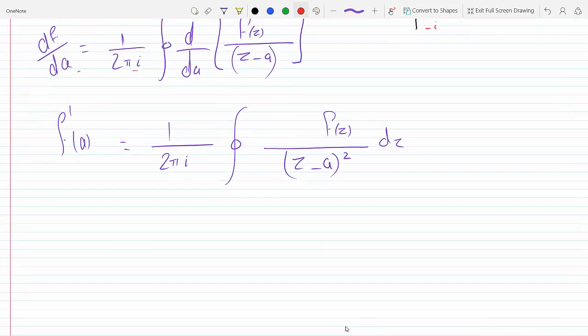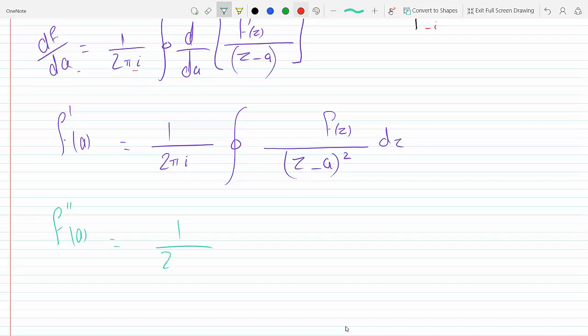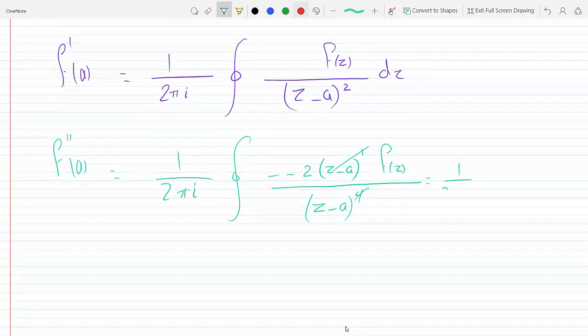Now if you go to take the second derivative, what do we get? We get 1 over 2 pi i. Again quotient rule. Remember, F of z is constant with respect to this differentiation, this is D over DA. So we get 0 minus 2 times z minus A to the 1 times F of z times the chain rule which is minus 1, so this goes away. It becomes plus over z minus A to the 4. So one of them can, so there's minus minus here, one of them cancels out. And I have left what? 1 over 2 pi i, now the 2 comes out and we have a 2 here instead of 1. Times F of z integral, closed integral over z minus A cubed.